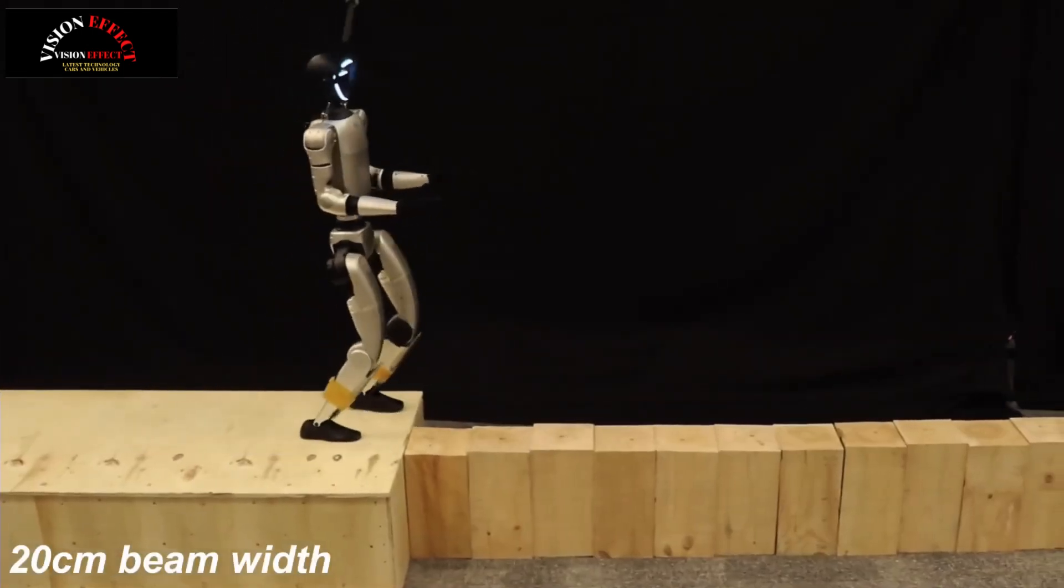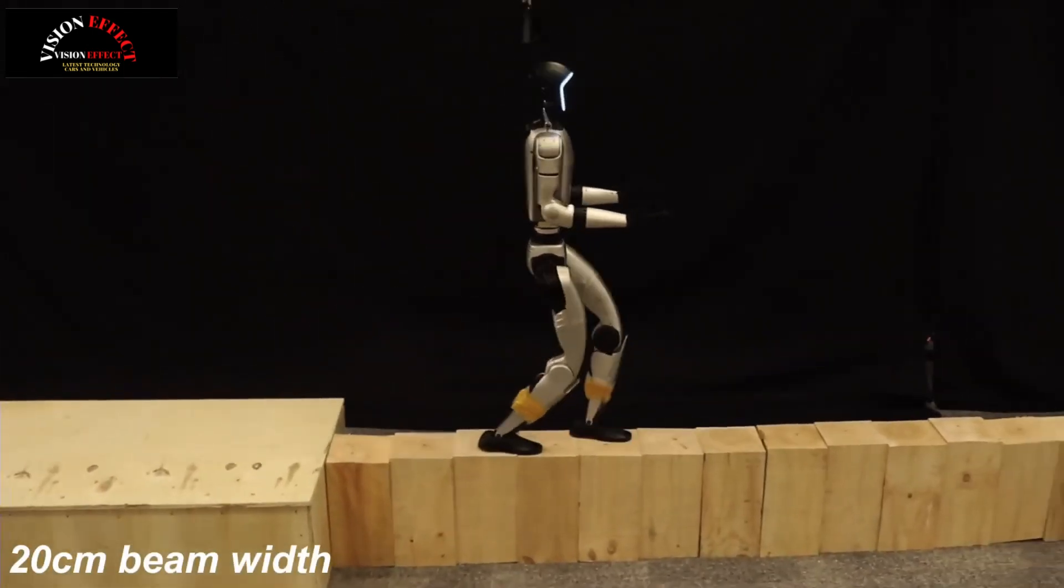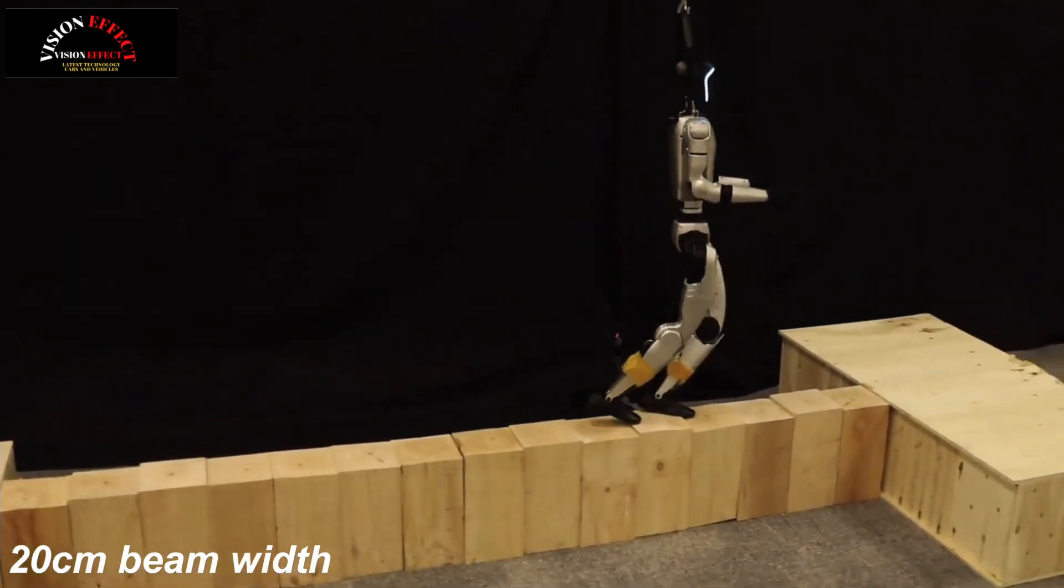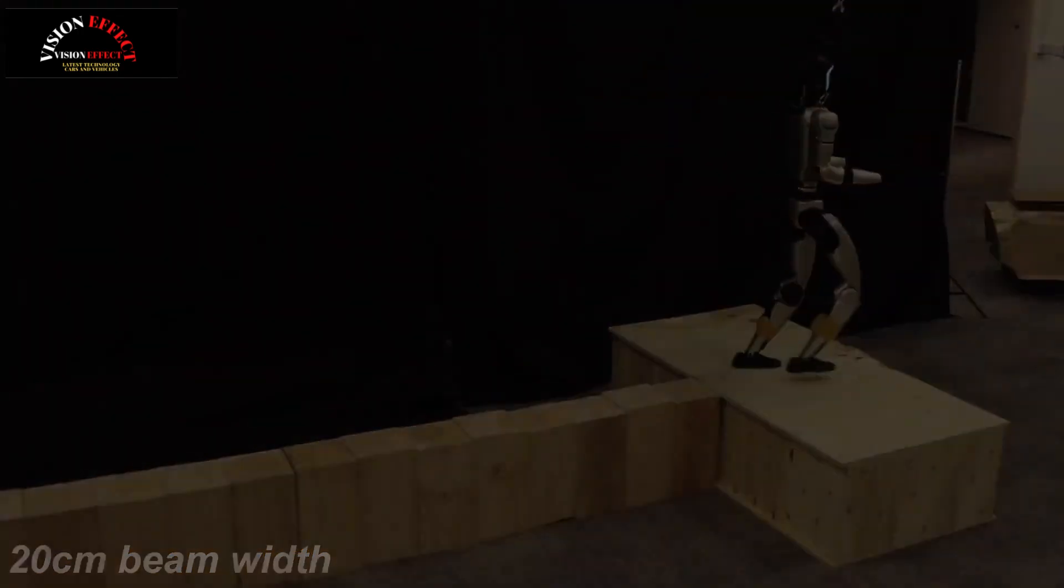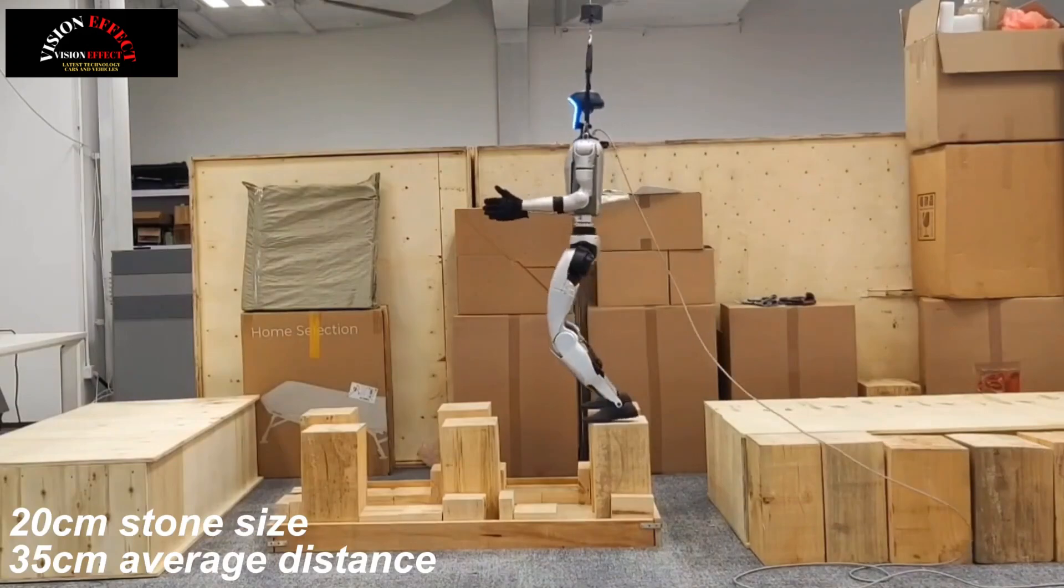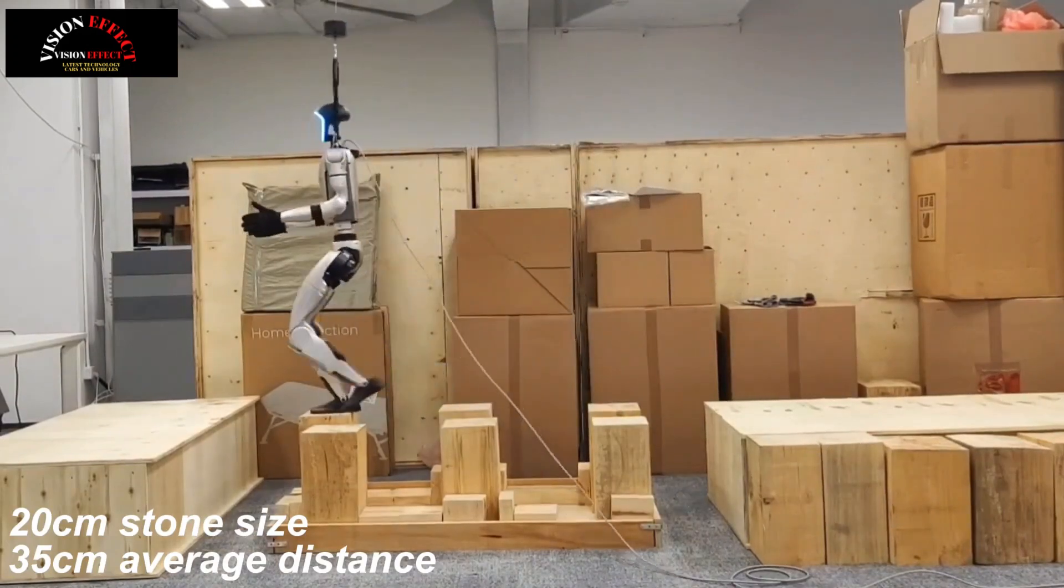In phase two, the policy is fine-tuned in the task domain and the full set of observations and rewards are used. The double-critic module undergoes deep copying. The robot-centered height map reconstructed using LiDAR data is combined with proprioceptive information to serve as input for the actor.